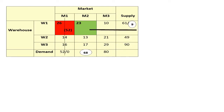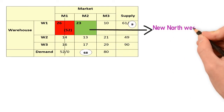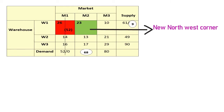We repeat the same procedure and select the next Northwest Corner, which is cell W1,M2, shown in green. For this selected cell, the available supply units are 9 and the demand or requirement is 68 units.